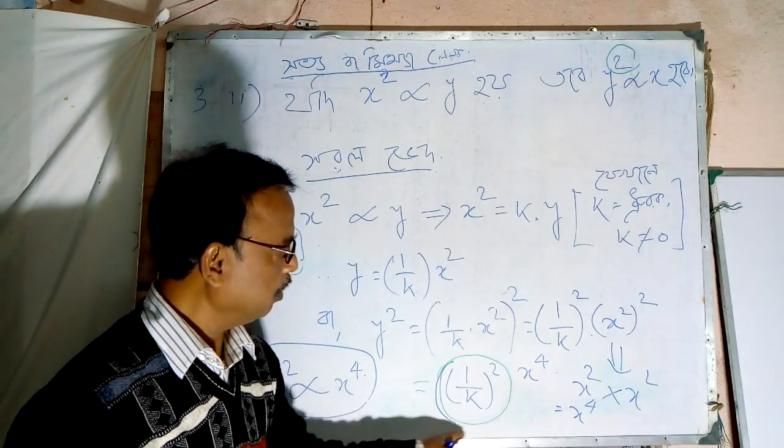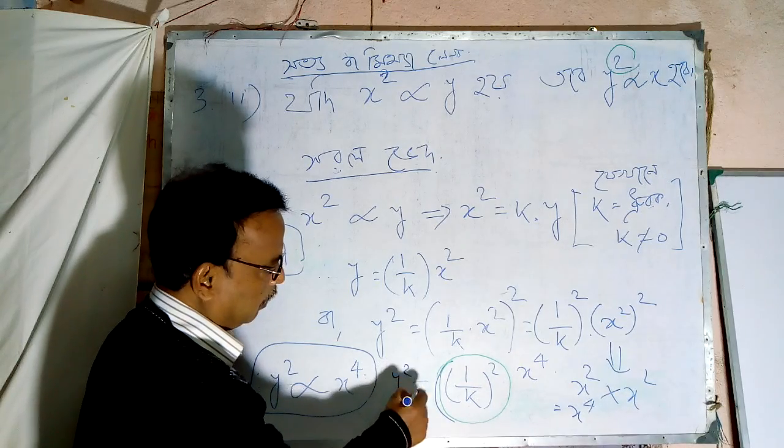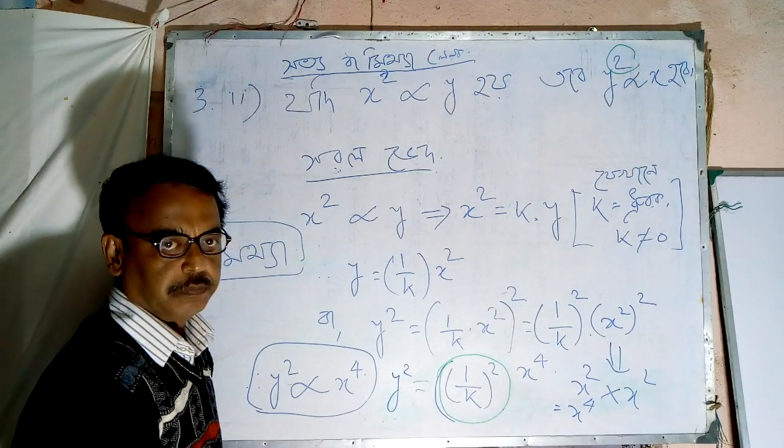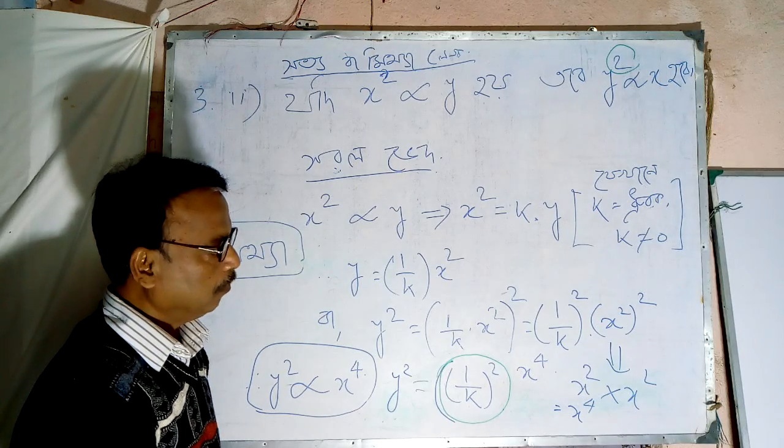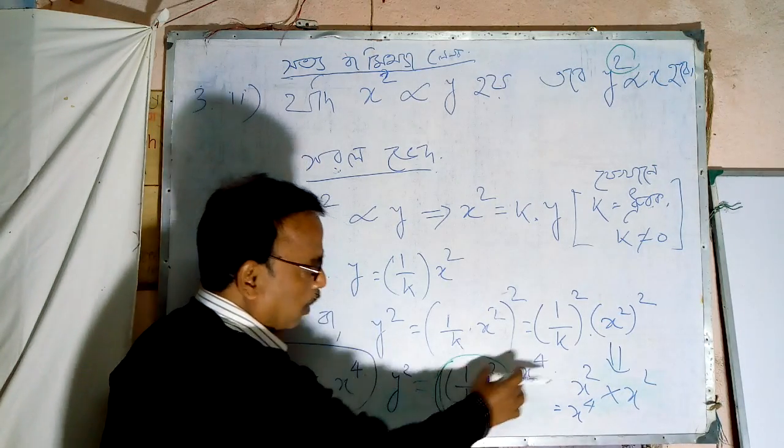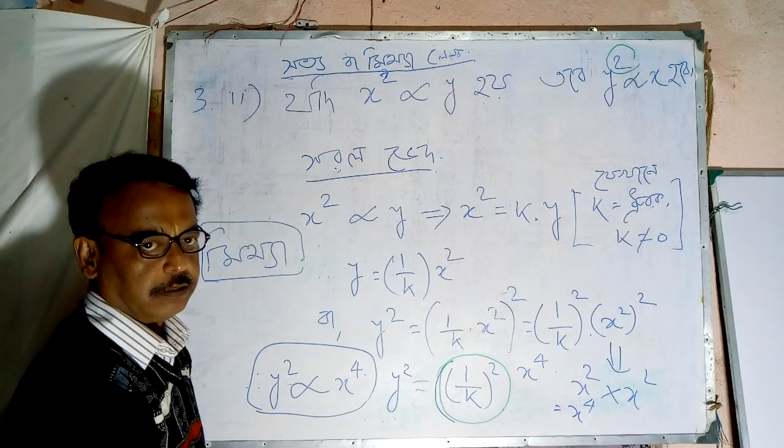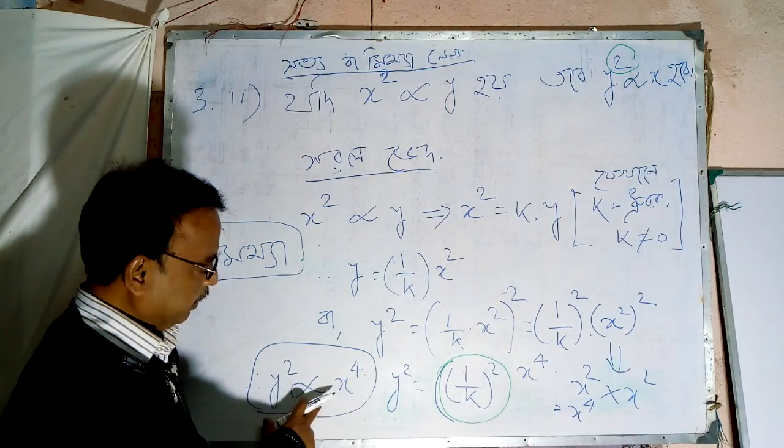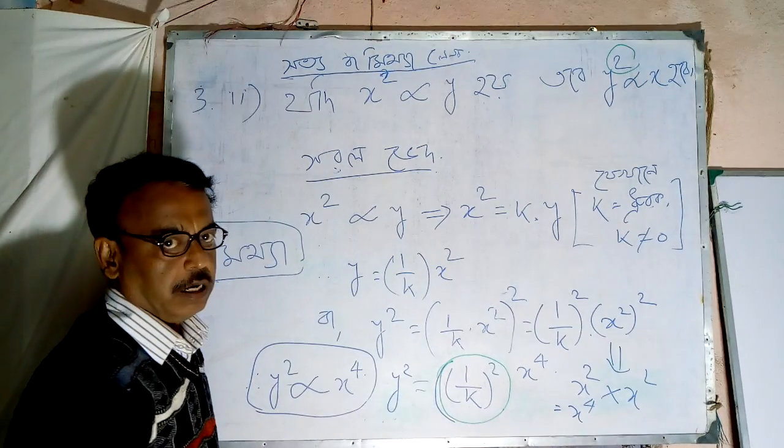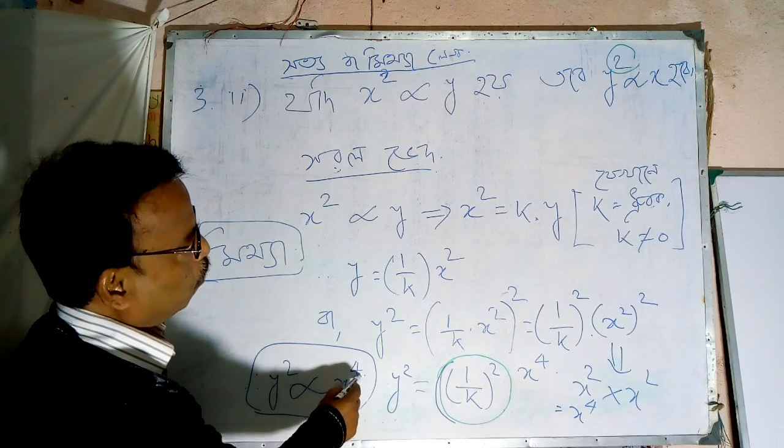y square is equal to x3 by 4. y square is the expression. y square varies as x4. That is the answer. y square varies as x4.